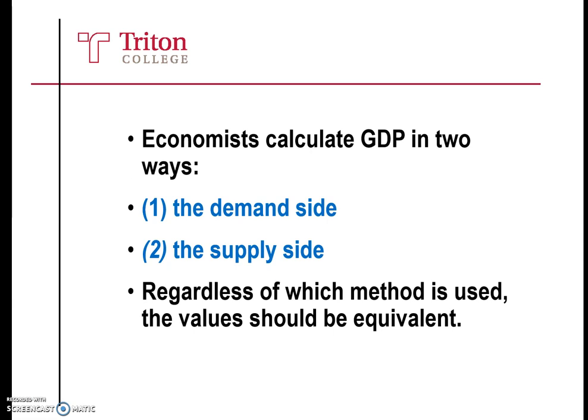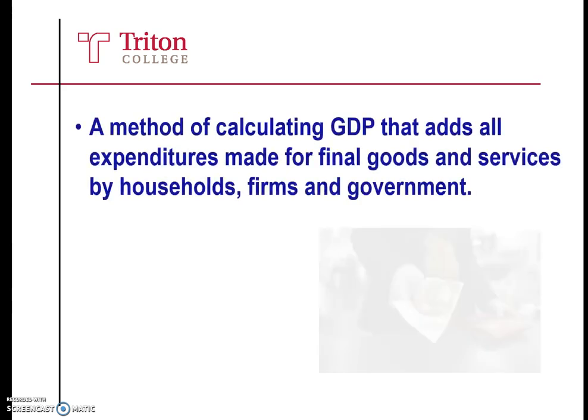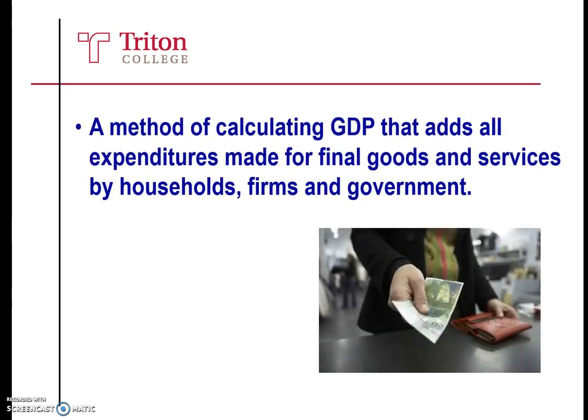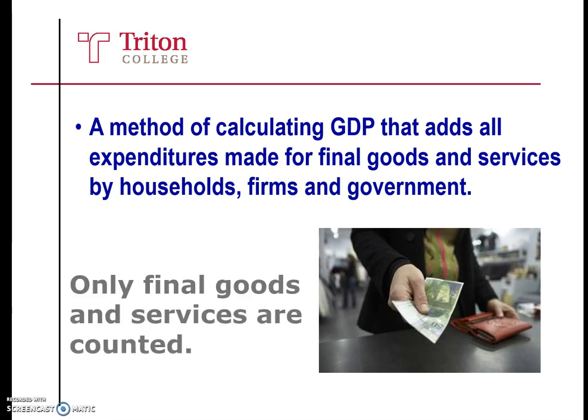In this video, we will be detailing the demand side. Calculating GDP is a method of adding all expenditures made for final goods and services by households, firms, and government. We will only look at final goods and services — we do not want to double count.